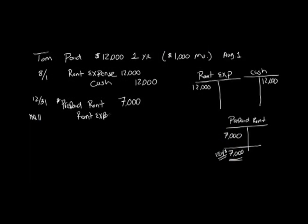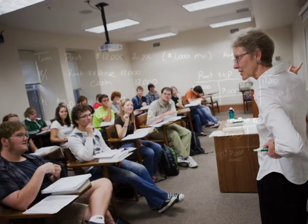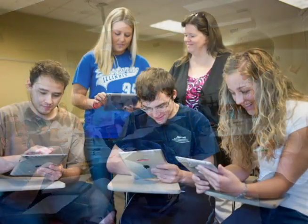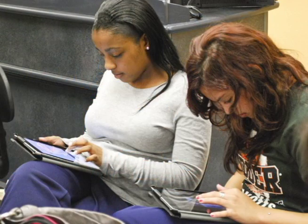For example, in a flipped classroom, an instructor might record lectures or demonstrations to be viewed by students on their own, and then begin class with a dynamic activity incorporating information from the recordings as well as other assigned materials.